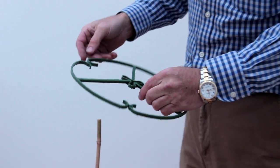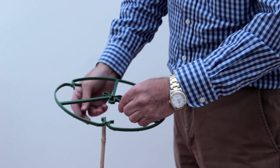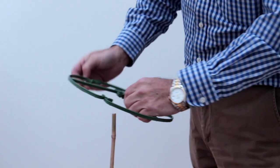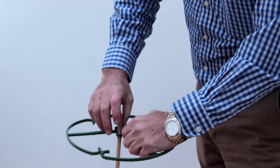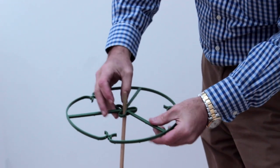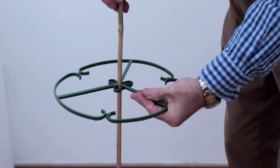They easily go on to any cane up to about 10-12 millimeter diameter. It goes on like this, clips on like that and is easily adjusted up or down.